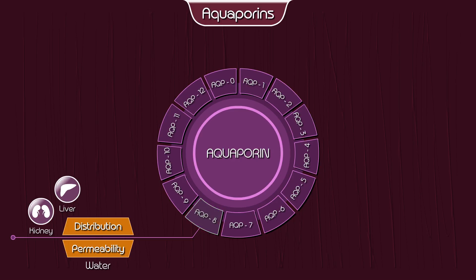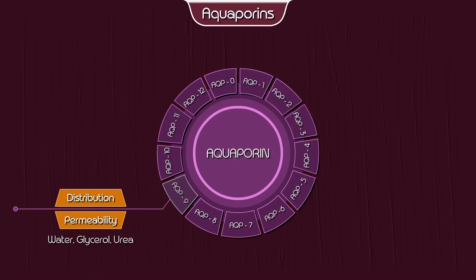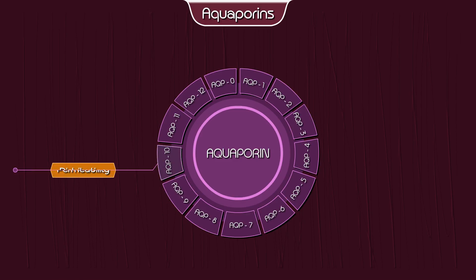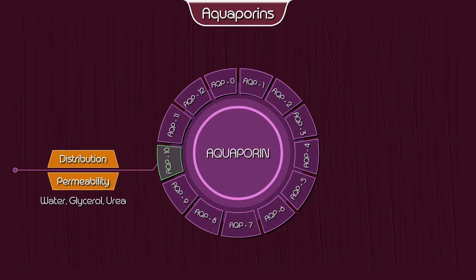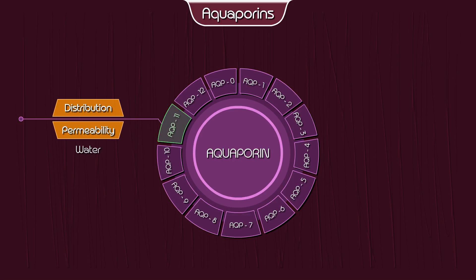Aquaporin 8 — permeability: water; distribution: the kidney, liver, testes, intestine, and pancreas. Aquaporin 9 — permeability: water, glycerol, urea; distribution: the liver, leucocytes, brain, and testes.